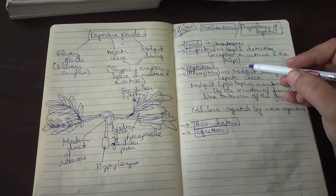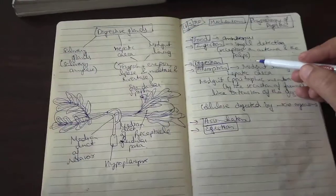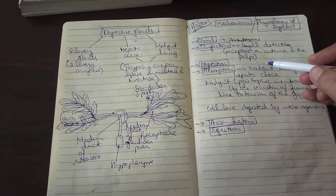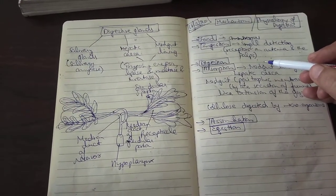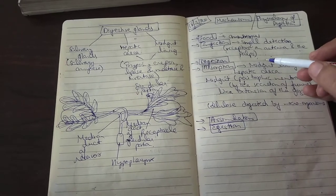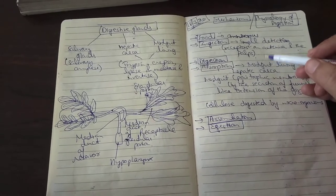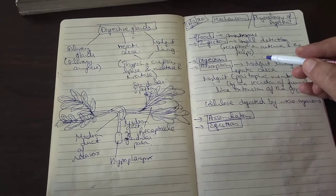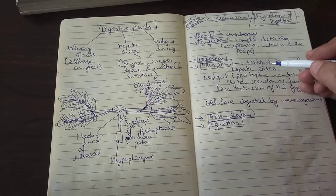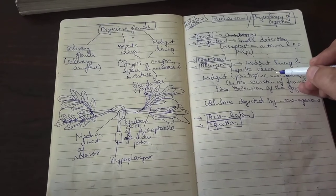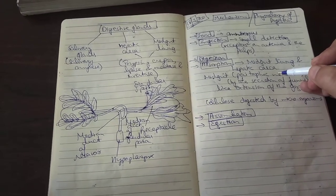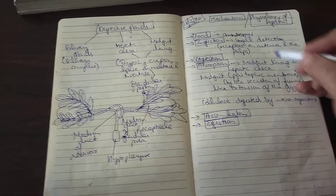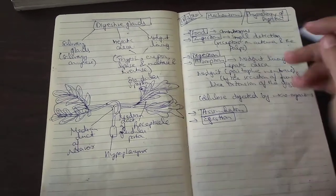In the mouth the food is mixed with saliva, brought into the pre-oral cavity by the common salivary duct which opens behind the hypopharynx. Then the hypopharynx assists in swallowing the food and passing it through the mouth into the pharynx, where it reaches the crop by peristalsis movement through the esophagus.